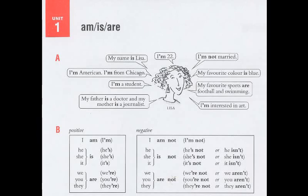A. My name is Lisa. I am 22. I am not married. I am American. I am from Chicago. My favorite color is blue. I am a student. My favorite sports are football and swimming. My father is a doctor and my mother is a journalist. I am interested in art.